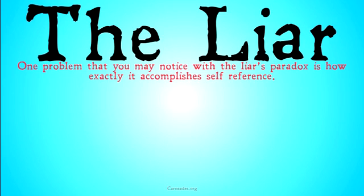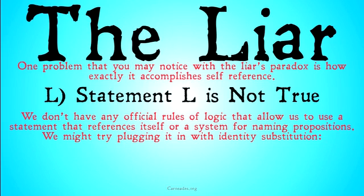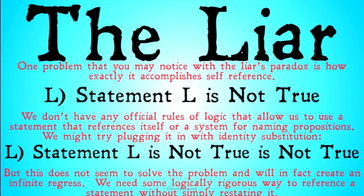Going to the liar's paradox: one problem you may notice with the liar's paradox is how exactly it accomplishes self-reference. If I name some statement 'Statement L' and then have my statement be 'Statement L is not true,' with our predicate calculus we don't really have a rule that says you can name a statement — nothing that actually tells me this statement is Statement L. Many people note this problem by saying that using identity substitution, the only real way to reference this statement is by plugging the statement in for itself, which gives 'Statement L is not true is not true.' Clearly, this is going to devolve into an infinite regress and we're never actually going to be able to name this statement itself.